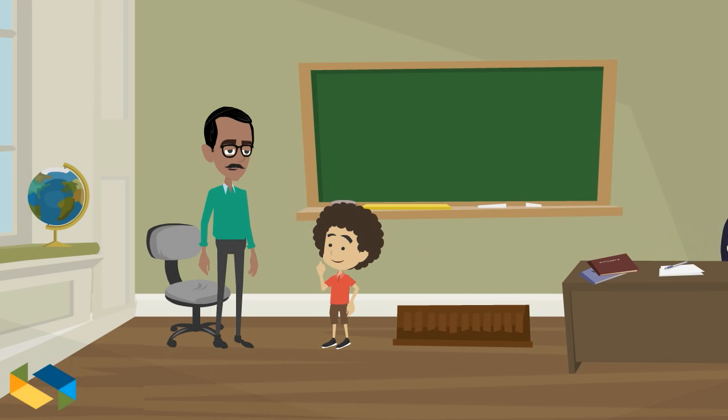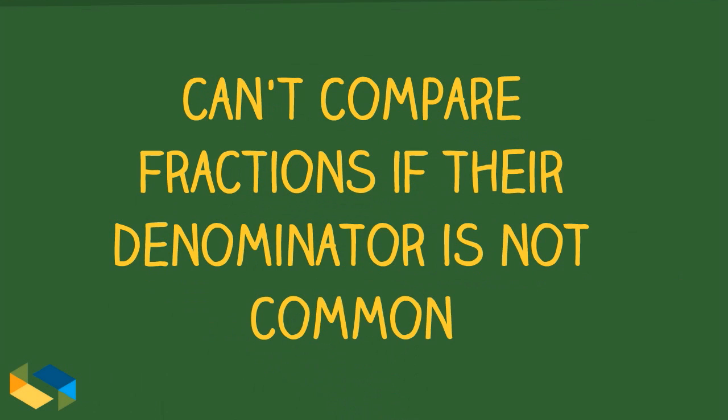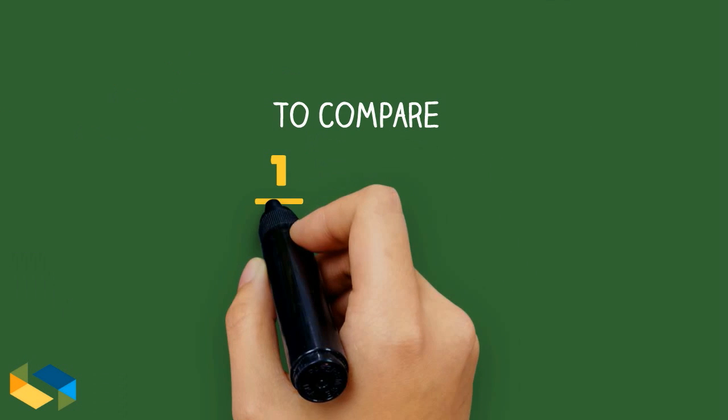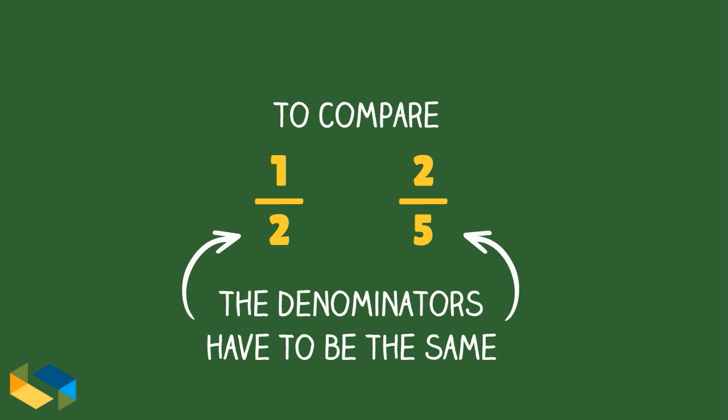This is exactly what happens with fractions as well. You can't compare two fractions if their denominator is not common. In other words, you can compare 1 upon 2 with 2 upon 5 only after their denominator is made the same.